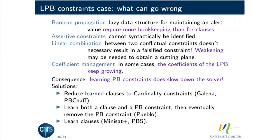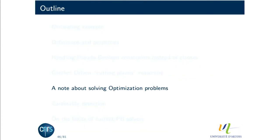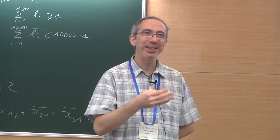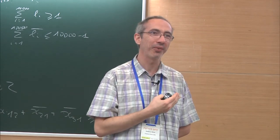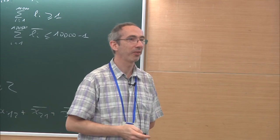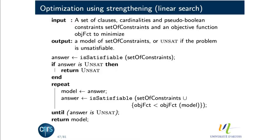The very first solver PBS was similar to SAT4J — an internal representation but learning clauses — or MINISAT+. Now, someone mentioned binary search. When you play with these solvers, textbooks are no longer the same. We are not going to use binary search because it doesn't work well. This is how you solve optimization problems with so-called linear search.